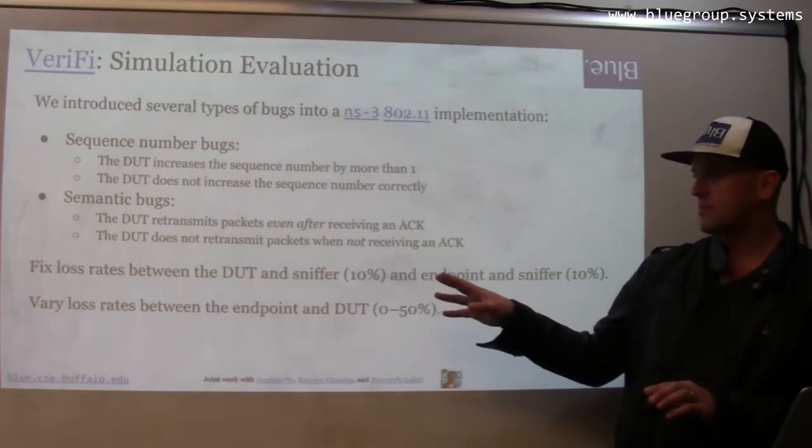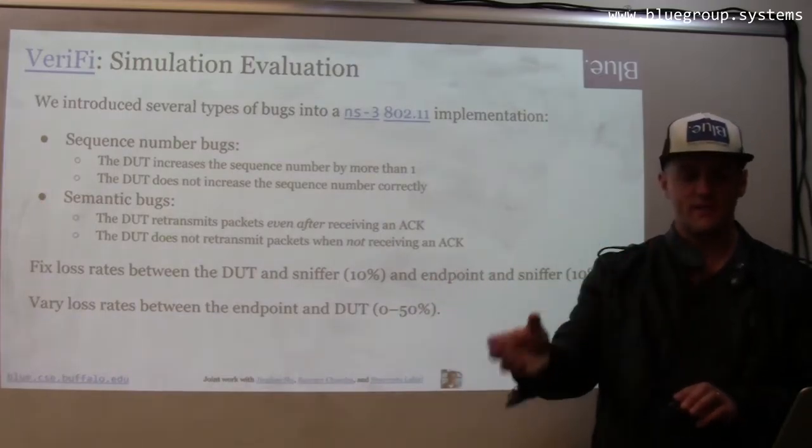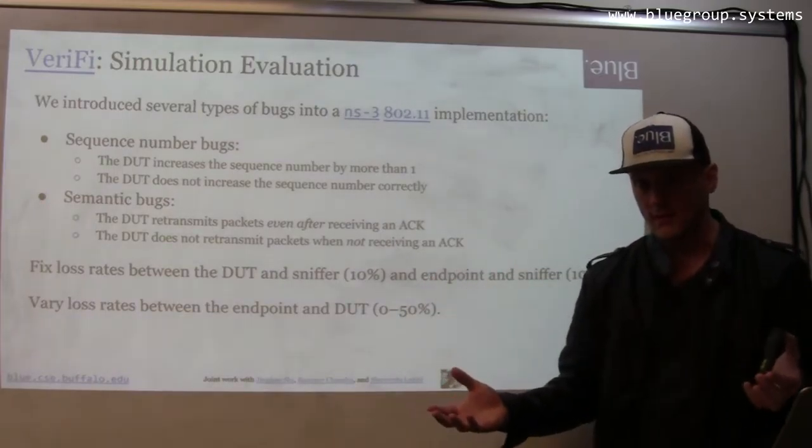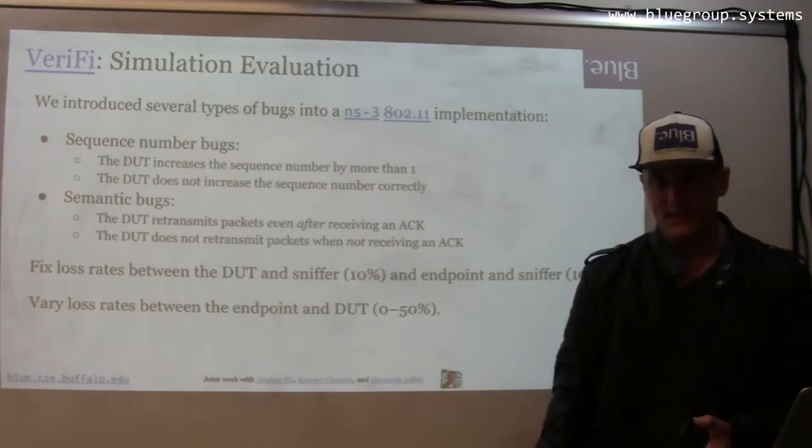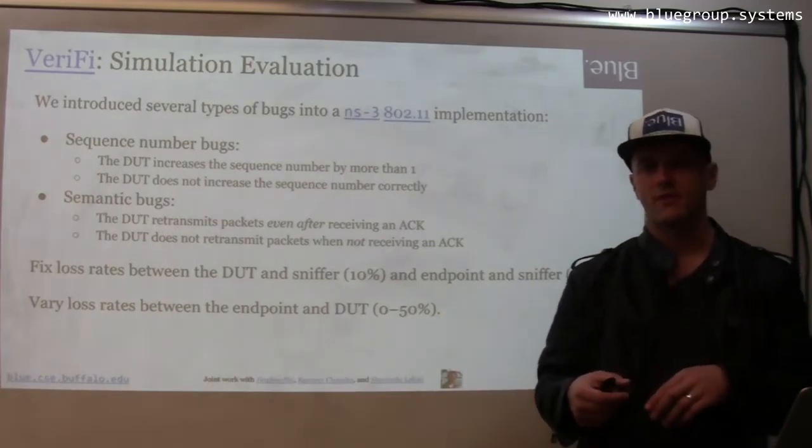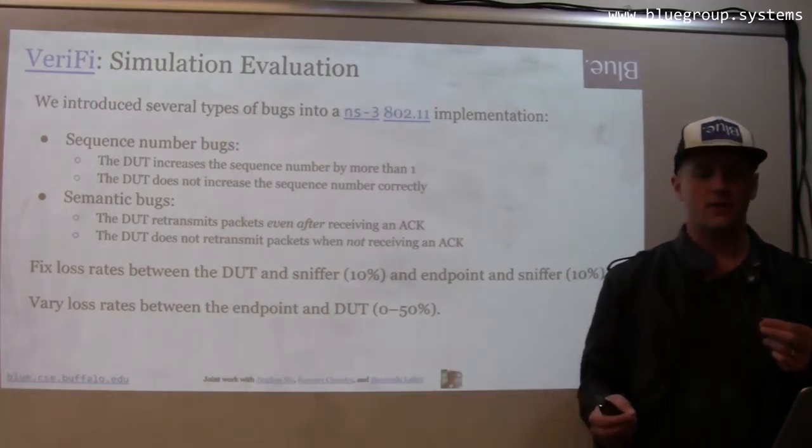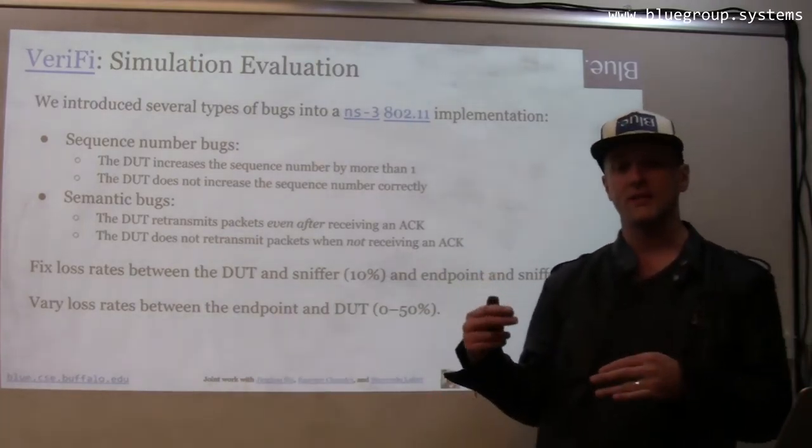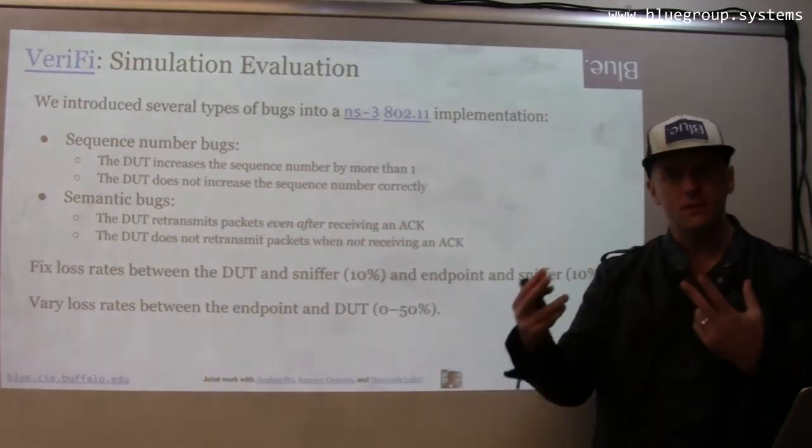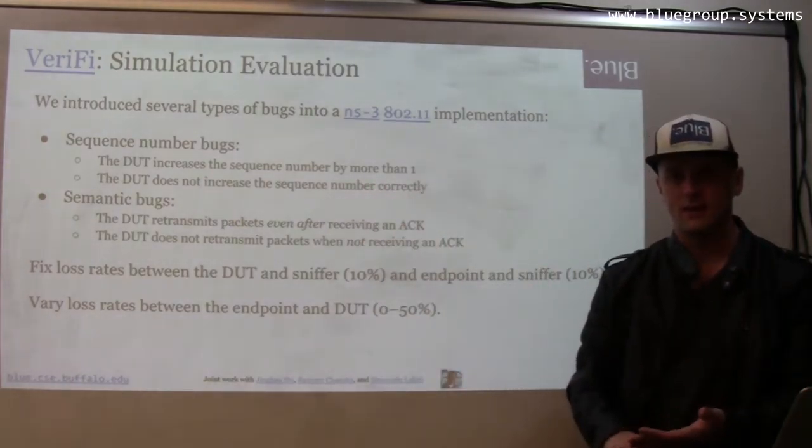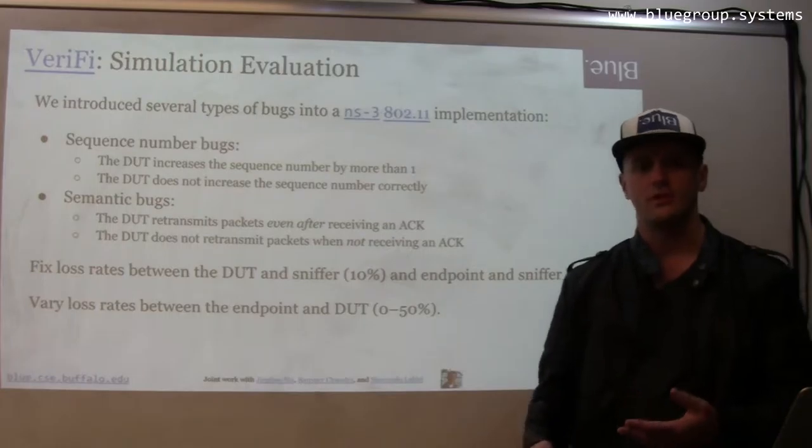The loss rates between the device under test and the sniffer and the endpoint in the sniffer were set at 10%, which means that the sniffer was receiving about 90% of the packets headed in either direction. We varied the loss rate between the endpoint and the device under test to stress these components of the protocol, the acknowledgement and retry and the sequence number issues.